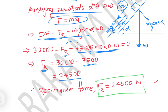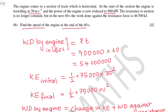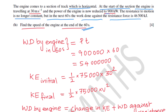Part b: the engine comes to a horizontal section, initially travelling at 30 meters per second. Power is reduced to 900,000 watts. The resistance is no longer constant, but in the next 60 seconds the work done against resistance is 46,500 kilojoules. Find the speed at the end of 60 seconds. Work done by engine equals power times time.